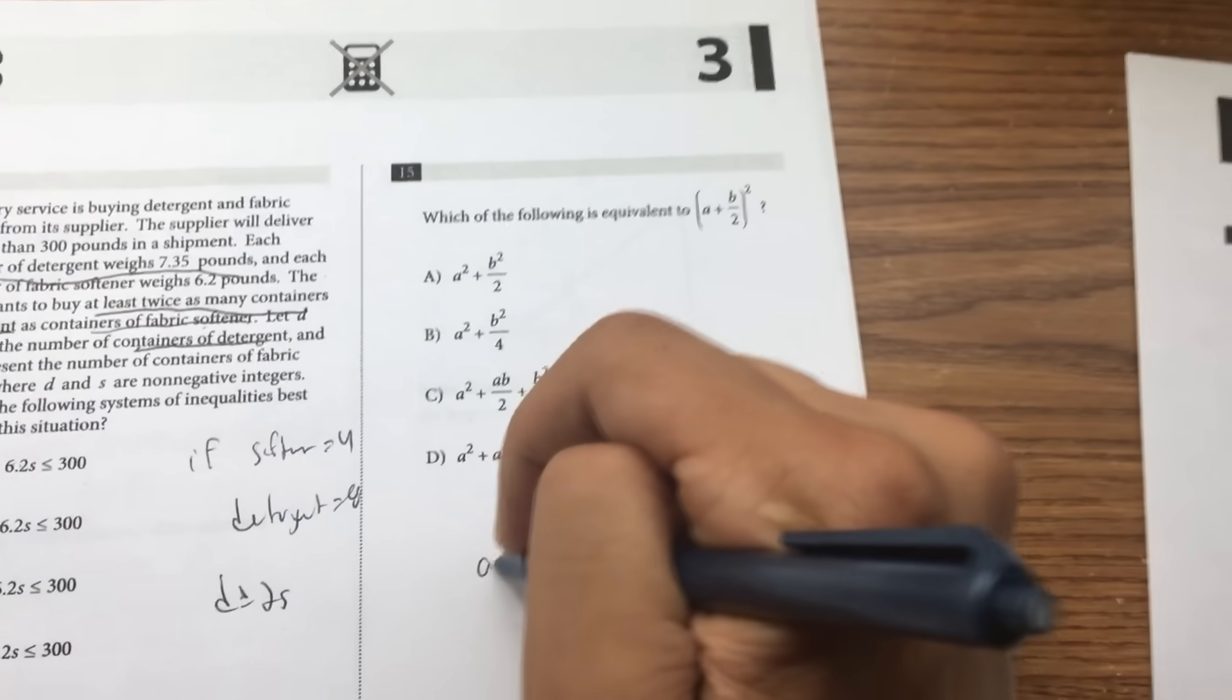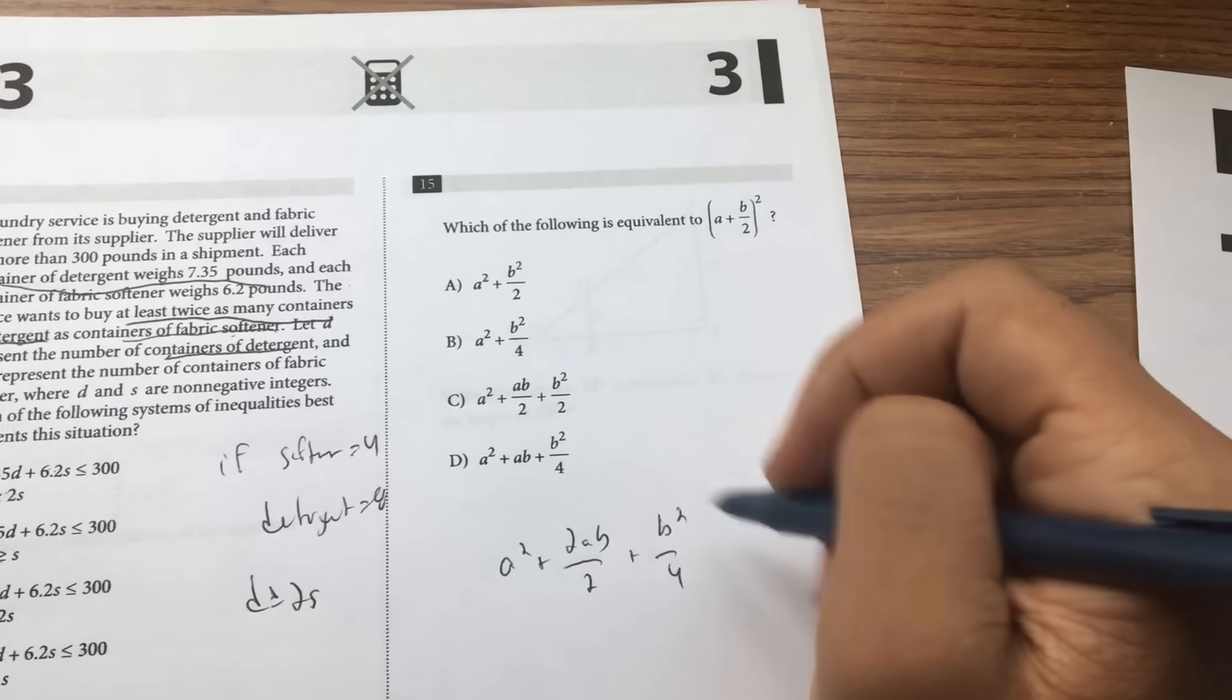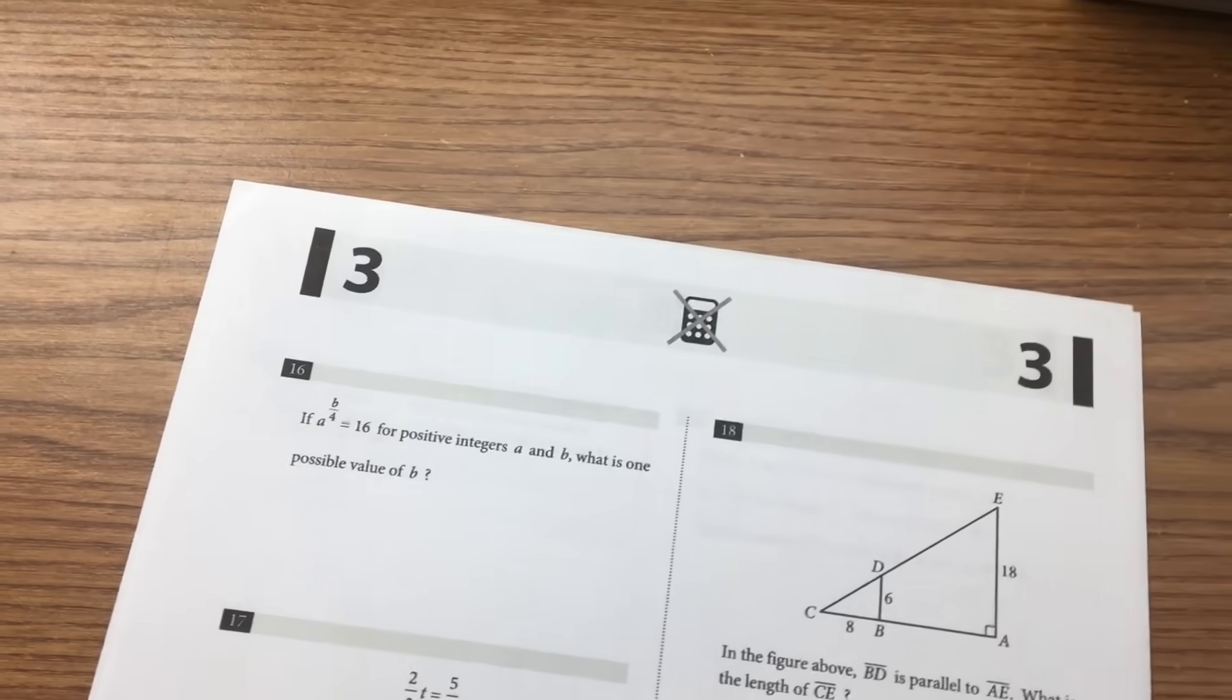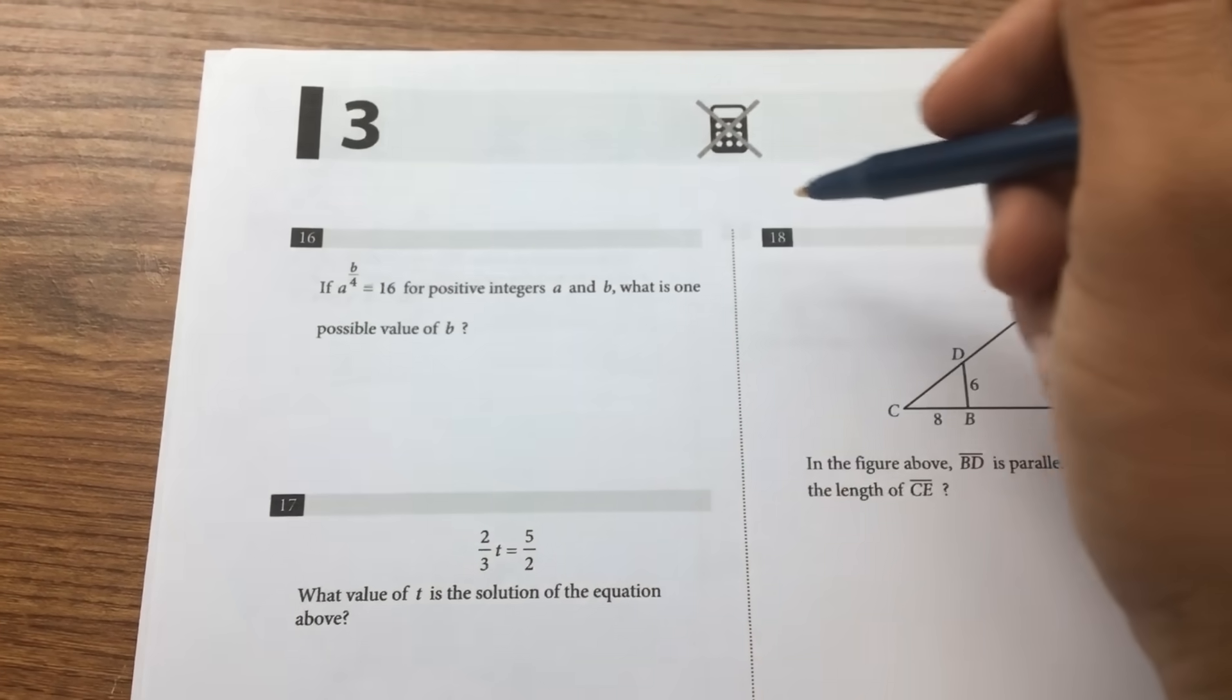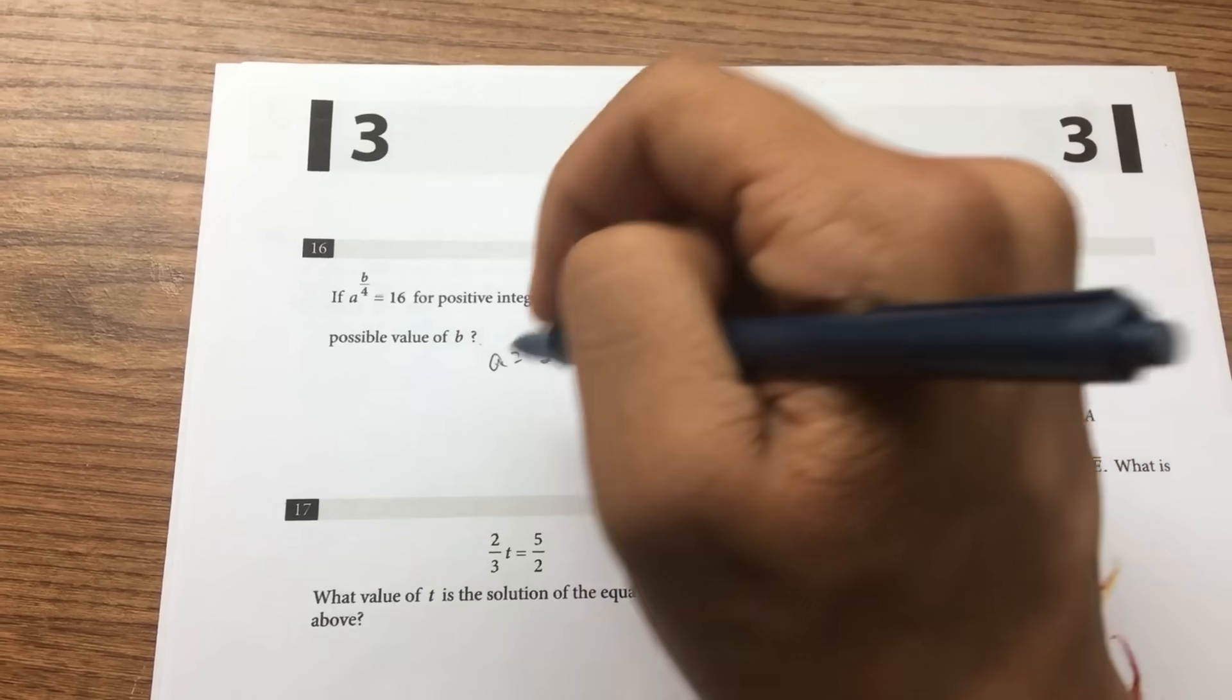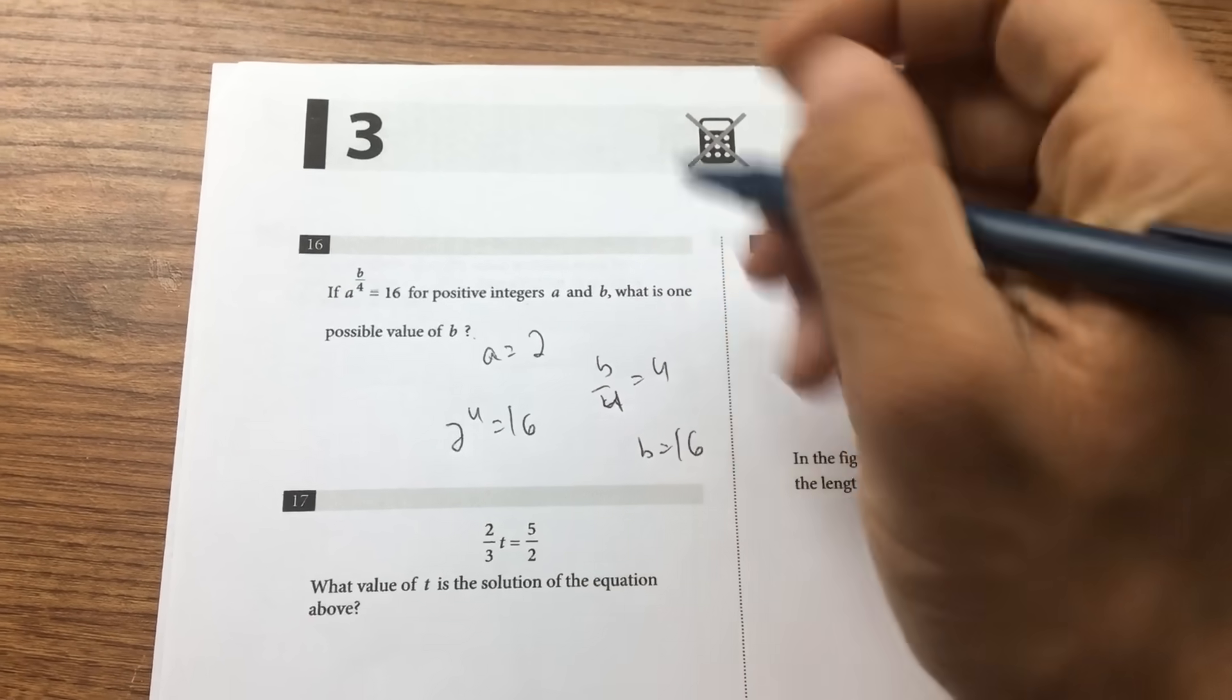Number 15, just dish it out, which would just cancel, so that's D. Number 16, since it's asking you this question has many possible answers, so just substitute numbers. Let a equal 2. 2 to the 4 equals 16. So b to the 4 equals 4. If b equals 16, so 16.